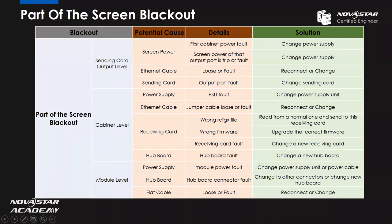For the third situation, the module level, the first important thing is to check the power supply — if there is something wrong, change the power supply or power cable. For the hub board, if it is disconnected or faulty, change to other connectors or replace the hub board. Also, for the flat cable — same as the Ethernet cable — if it is loose or something is wrong, reconnect or change another cable.